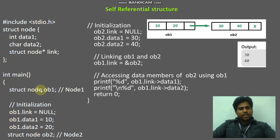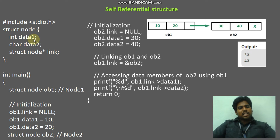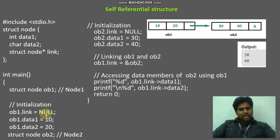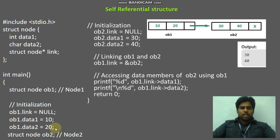What is OB1? It is a structure variable for this node. Using OB1 only, we can access this data. Using this structure variable only, we can access each and every data member in the structure. And once you declare the structure variable, the memory will be assigned. Now, I am initializing values for the structure data members. For data1, I am allocating value 10. For data2, I am allocating 20. OB1 dot data1 equal to 10, OB1 dot data2 equal to 20. At first, I am making the link as null. I have not created the second node yet, so OB1 dot link equal to null.